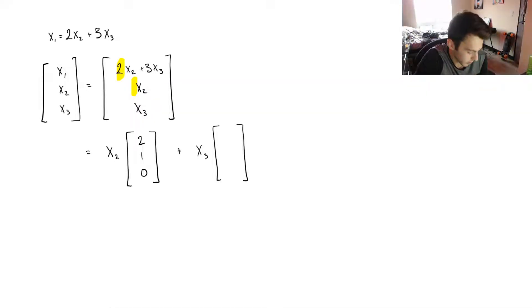And then, in the other vector, I've got, oops, that should be a 3. I've got 3x3s in the first component, 0 in the second, and then I've got 1 in the last.